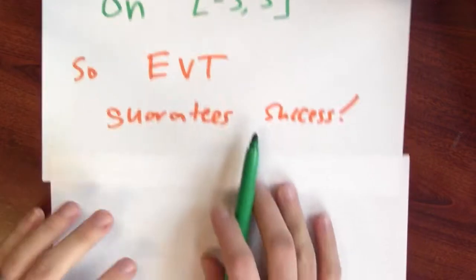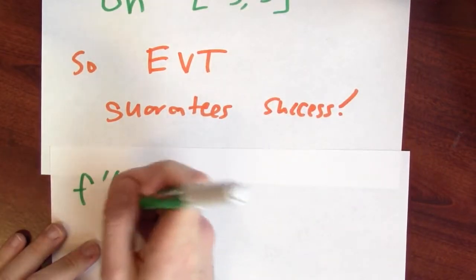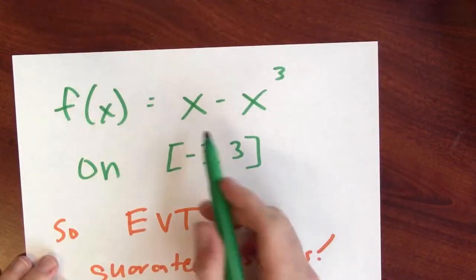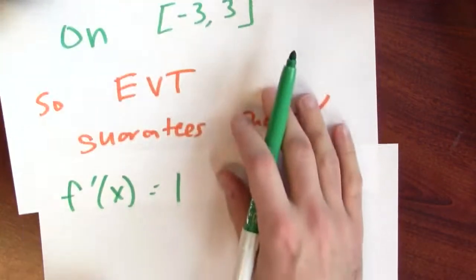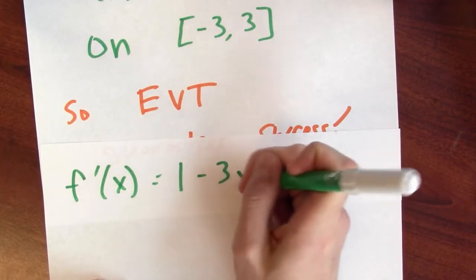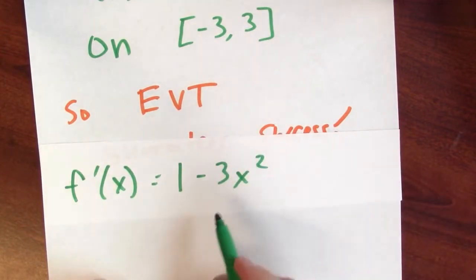I'll begin by listing off the critical points for this function. So I'll differentiate this function, right? And if I differentiate that function, the derivative of x is 1, and the derivative of minus x cubed is minus 3x squared. Alright, so there's the derivative.